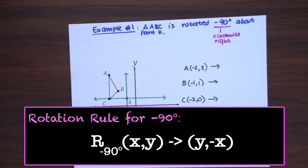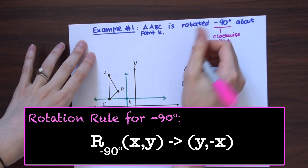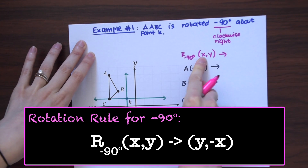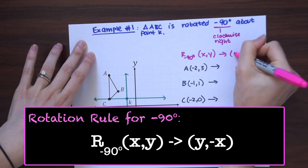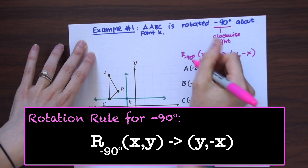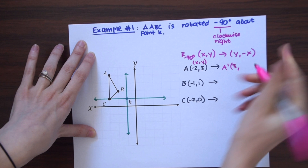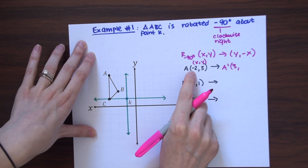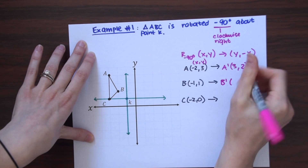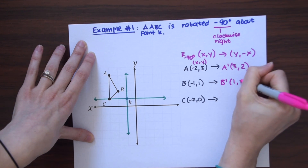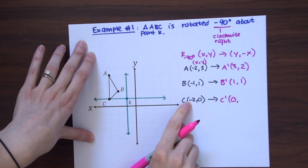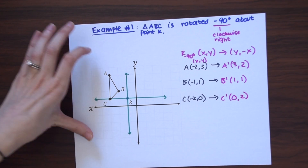Looking at our rotation rules for -90 degrees: (x, y) → (y, -x) — we switch and then negate the x. So A prime: y stays as 3, and -2 becomes positive 2, giving (3, 2). B prime: y is 1, and -1 becomes positive 1, giving (1, 1). C prime: y is 0, nothing changes for zero, and -2 becomes positive 2, giving (0, 2). Now we can graph our new coordinates.